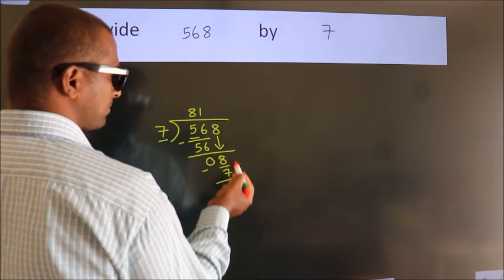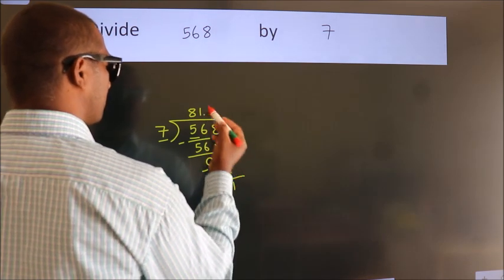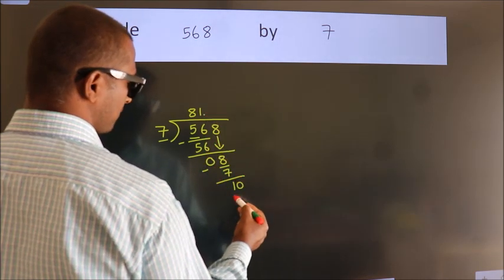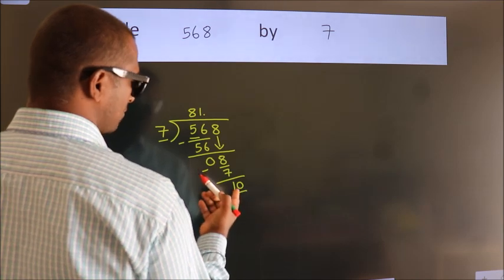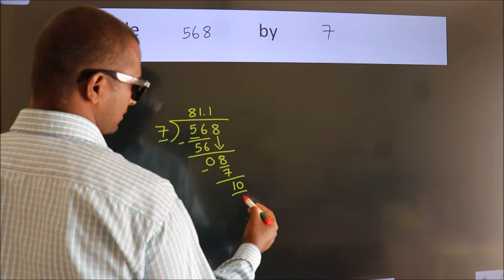After this, no more numbers to bring down. So what we do is, we put a dot and take 0. So 10. A number close to 10 in the 7 table is 7 once, 7.